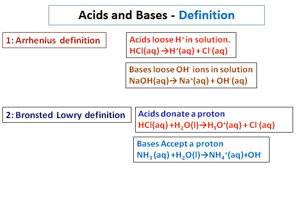For bases, previously we said a base should lose a hydroxide. But a compound like ammonia has no hydroxide. So we apply the Bronsted-Lowry definition: when ammonia is put into water, it takes up a proton and forms NH₄⁺, giving OH⁻ ions in solution. So this definition allows us to define any compound that accepts a proton as a base.